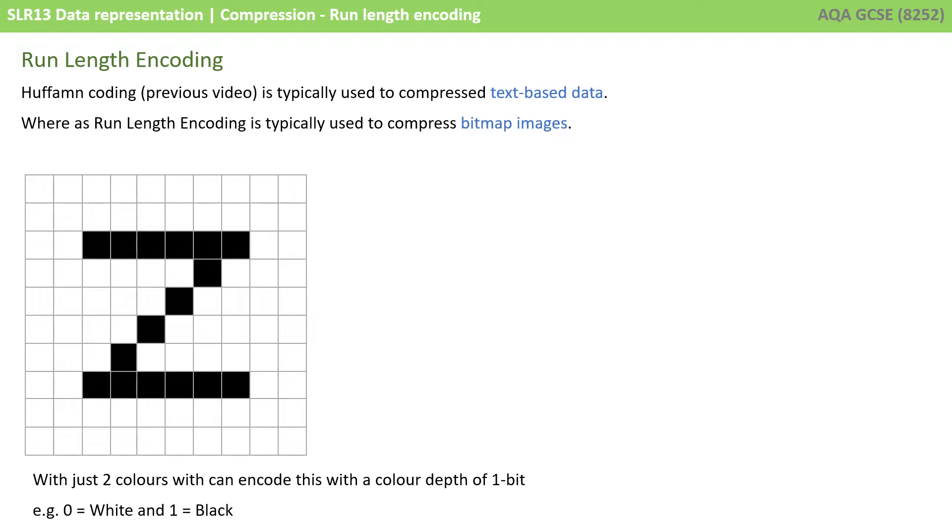In other words, we can use a single bit to represent each pixel, 0 for white and 1 for black.